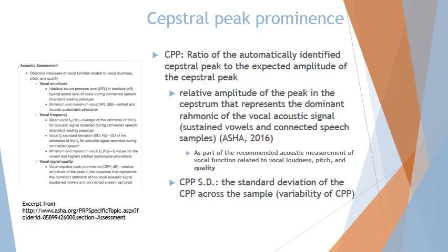If you have a good voice, your CPP would be high. CPP was actually the recommended acoustic measurement for vocal function related to vocal signal quality. It has been recommended even by ASHA as a good correlate to vocal signal quality, whereas frequency would be correlated by fundamental frequency or frequency range or standard deviation. Amplitude would be the habitual sound pressure level and the maximum and minimum vocal sound pressure level. Apart from the CPP value itself, the CPP-SD — the standard deviation of CPP across the sample — is also a parameter we would use for perceptual measures.